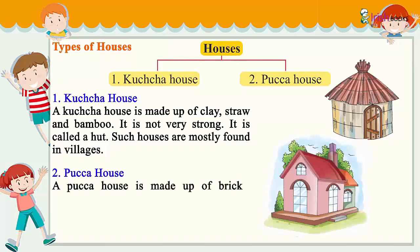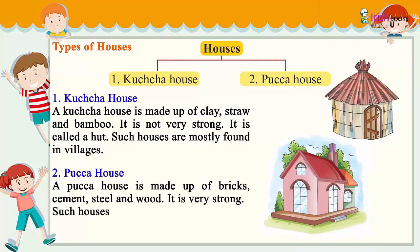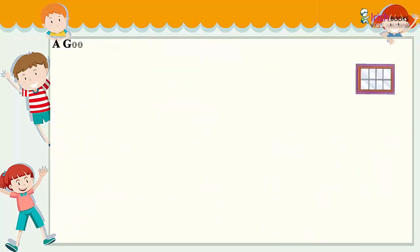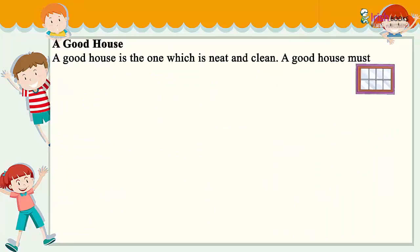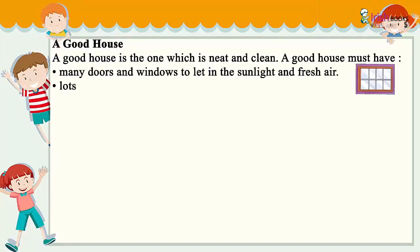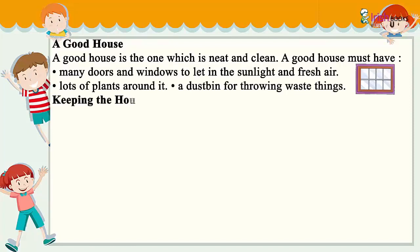A pakka house is made up of bricks, cement and steel. A good house must have many doors and windows to let in the sunlight and fresh air, lots of plants around it, and a dustbin for throwing waste things.